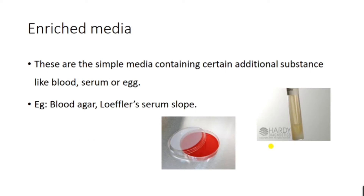In enriched media, certain additional substances like blood, serum, or egg are added to the normal agar medium to make it enriched so that bacteria will grow nicely. Examples include blood agar, where blood is used as the enrichment substance; Loffler's serum slope, where serum is the enrichment substance; and LJ medium, commonly used for Mycobacterium tuberculosis growth, where egg is added as the enrichment substance.